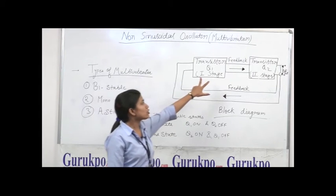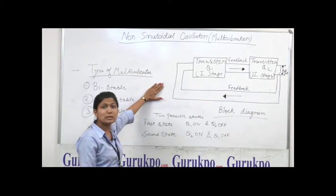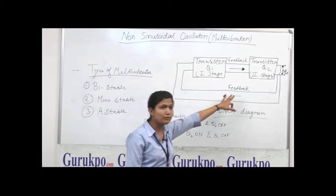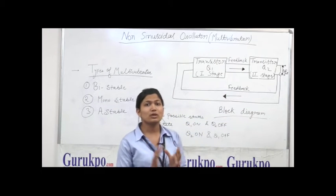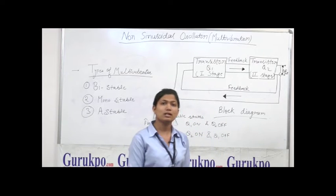There are two stages of amplifier. The output of one stage of amplifier supplies feedback to another stage of amplifier in such a way that one transistor is in on state at a time and another transistor is in off state at a time.